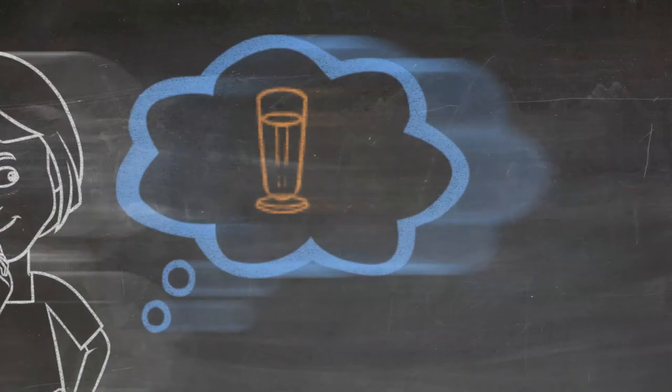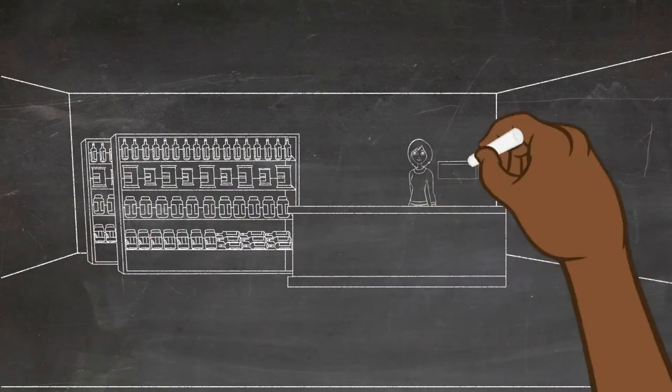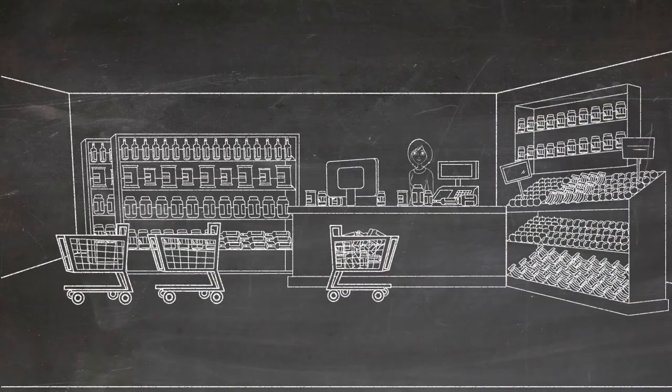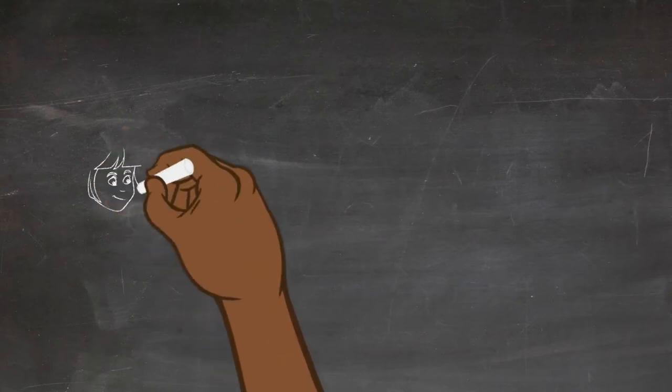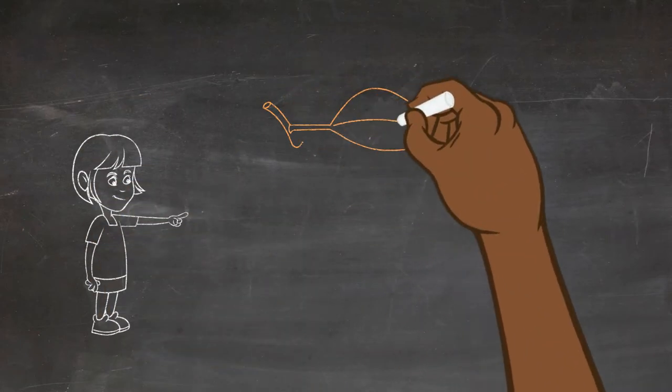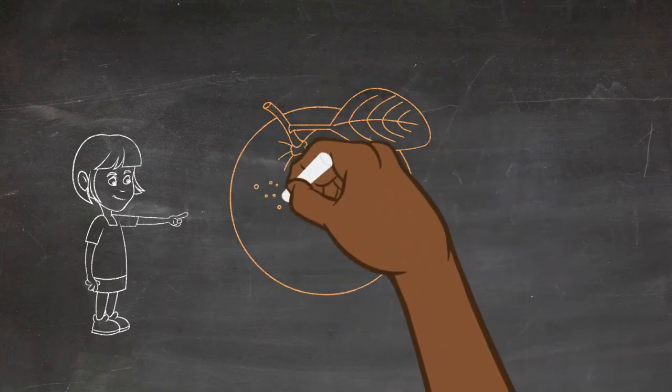So you decide to try your luck and you head to the supermarket, just on the off chance that there might be an orange left in the fruit section. You walk in the door, look over to the corner where the tray of oranges usually sit, and what do you happen to see? But one gleaming orange sitting there left in the tray.